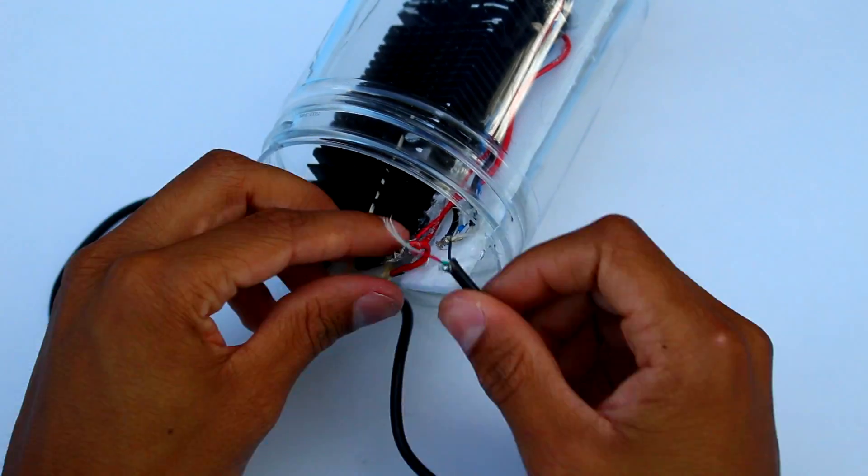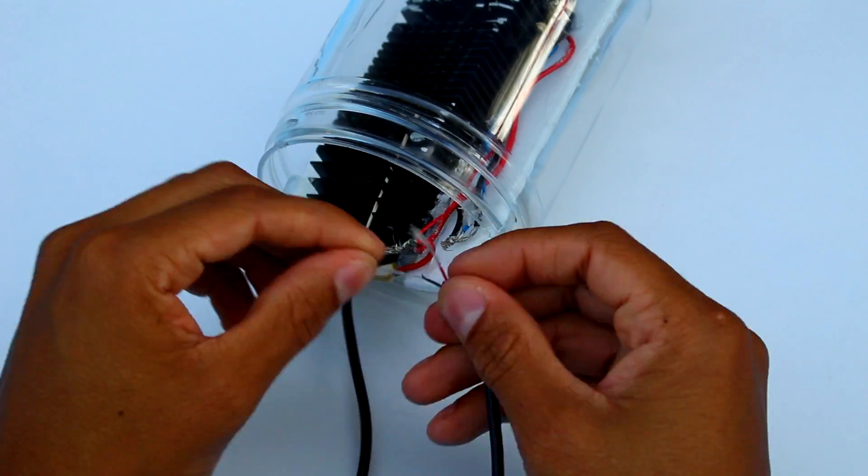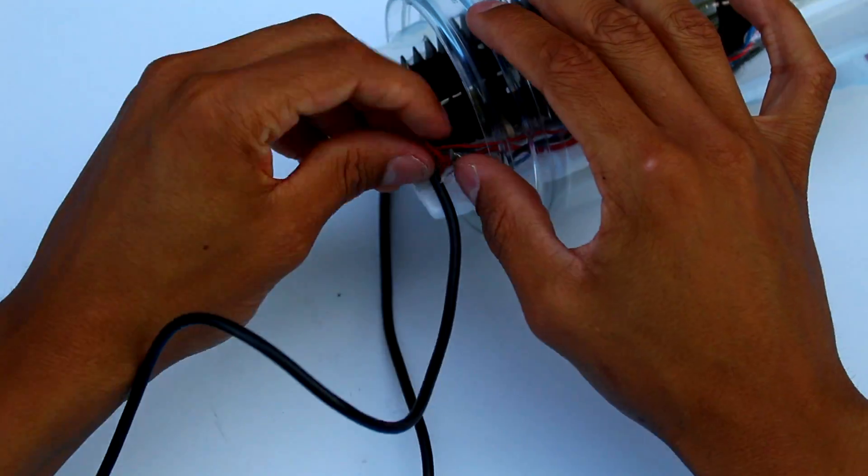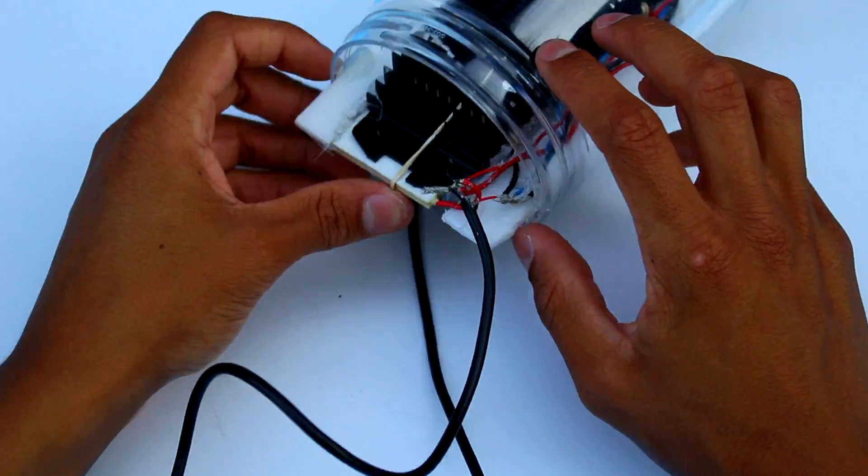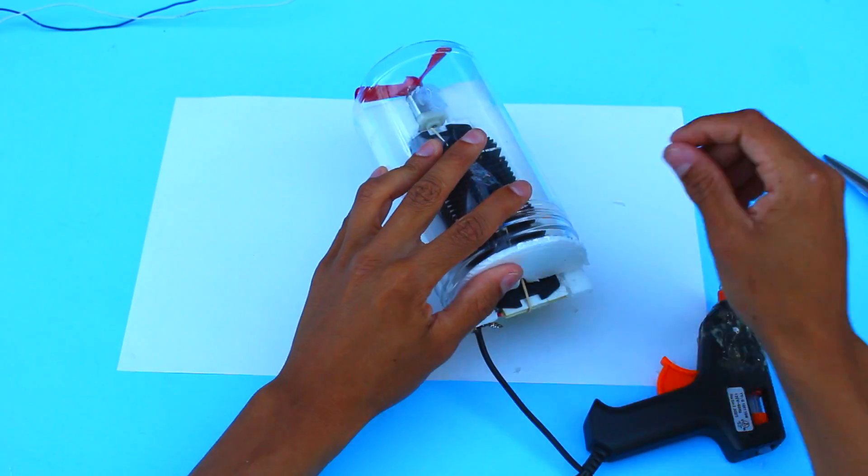Now, I'm going to wire this up to the Peltier element and motor attachment we have. Wiring it the opposite way will just make the opposite side cold and the motor spin in the opposite direction.